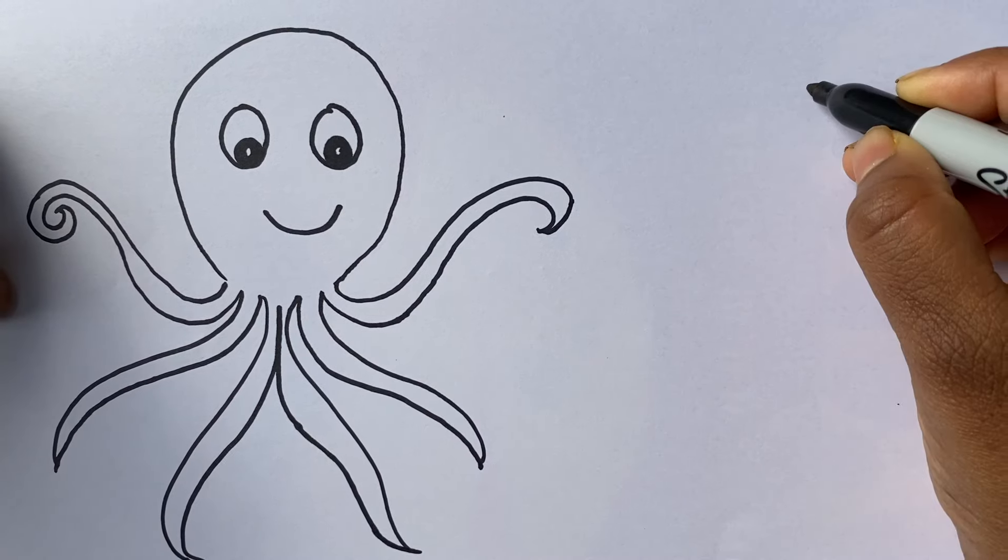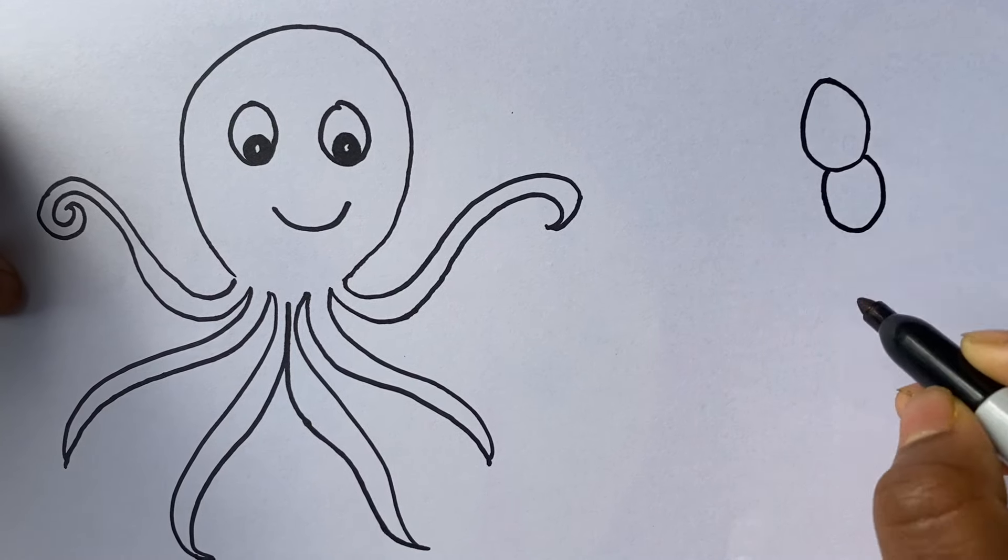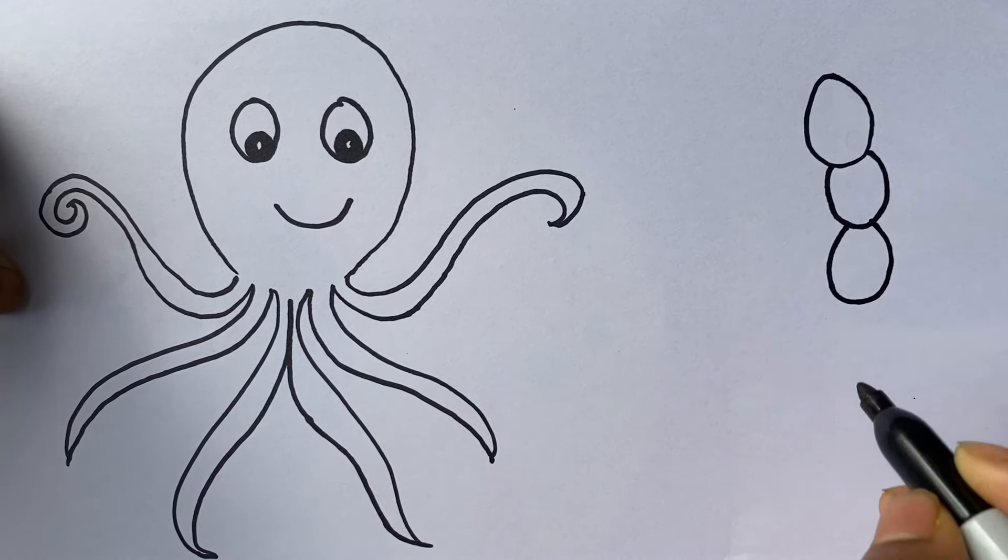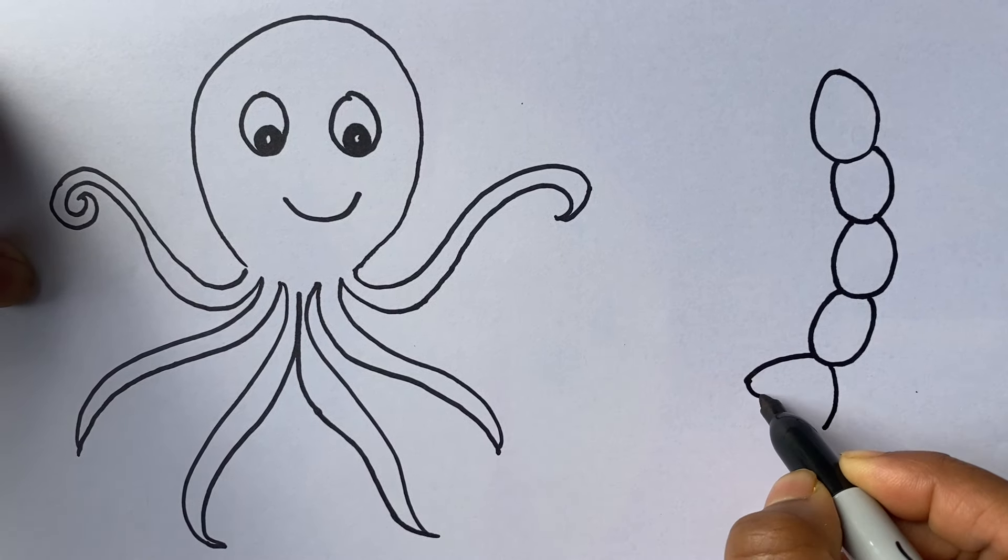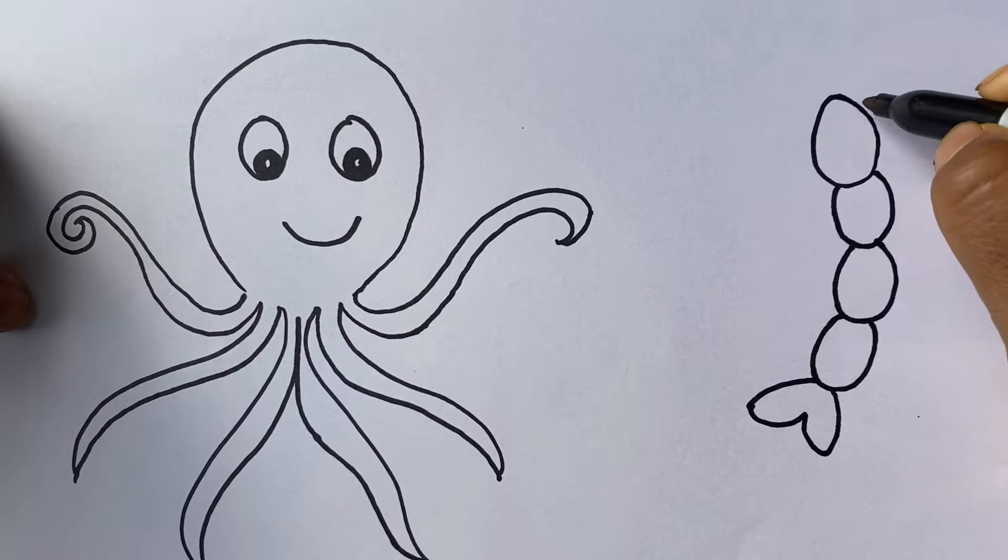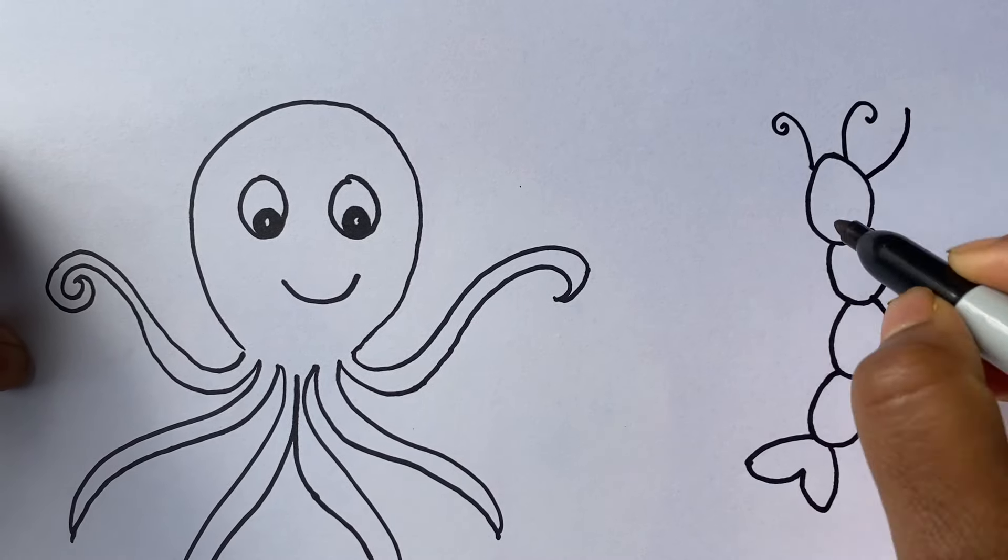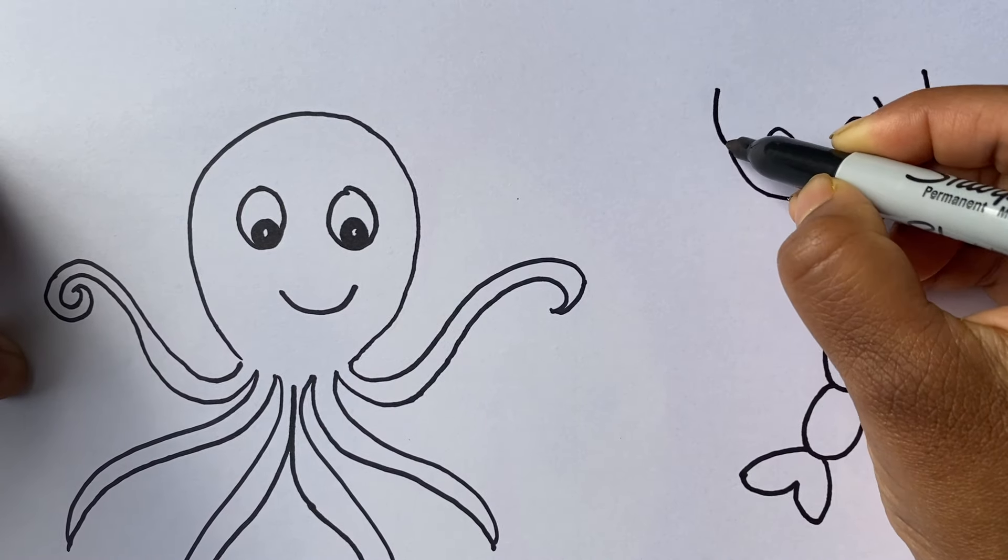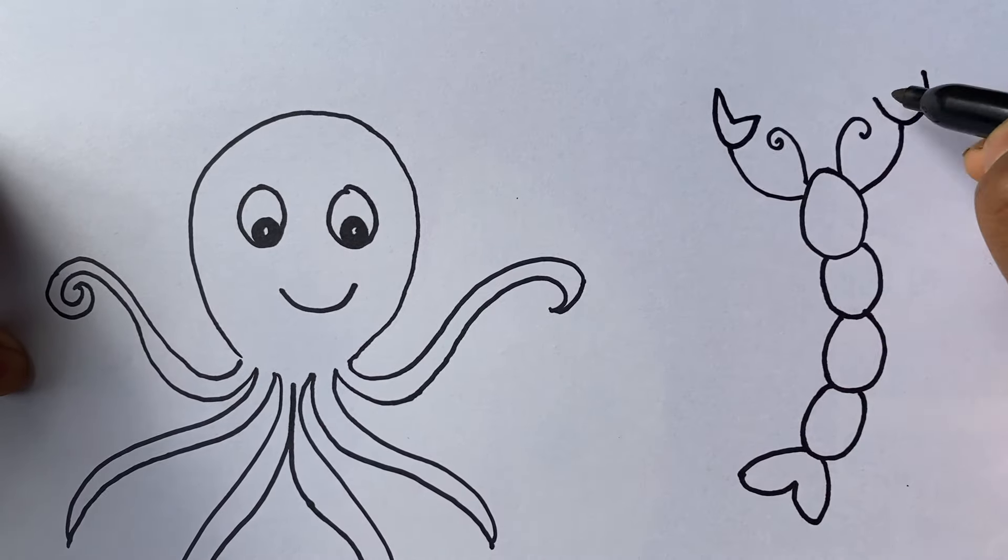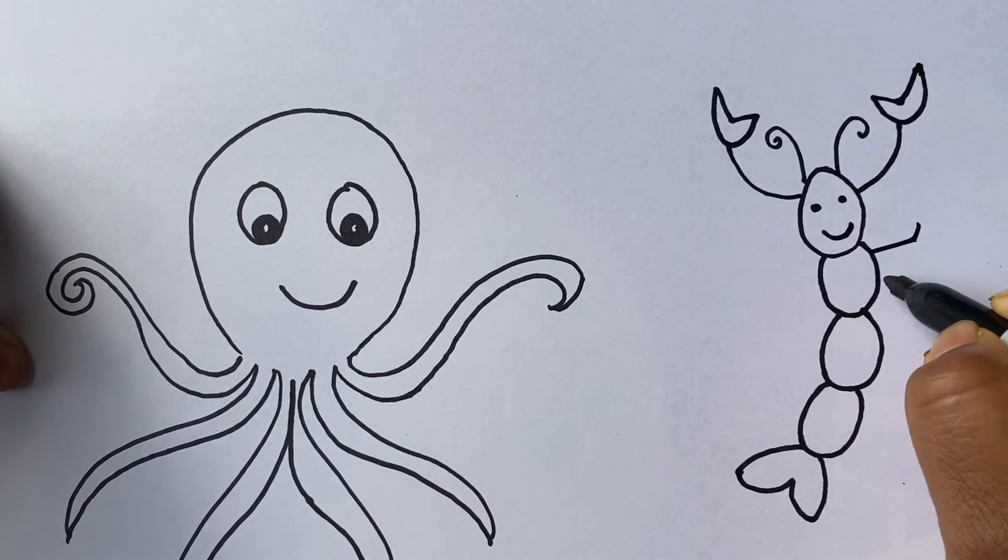Now lobster. Tail, antenna, claws, eyes, legs.